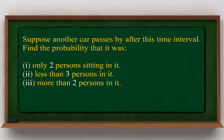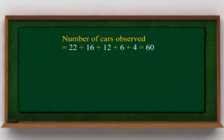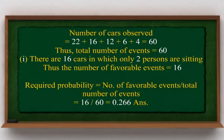Suppose another car passes by after this time interval. Find the probability that: (1) only 2 persons are sitting in it; (2) less than 3 persons are in it; (3) more than 2 persons are in it. Total number of cars observed equals 22 + 16 + 12 + 6 + 4 = 60; thus total number of events is 60. There are 16 cars with only 2 persons sitting; thus favorable events = 16. Required probability equals 16 divided by 60, which equals 0.266.